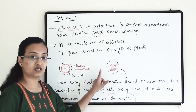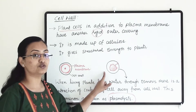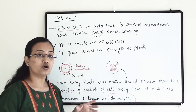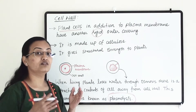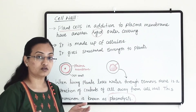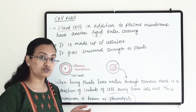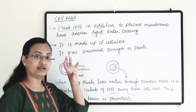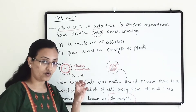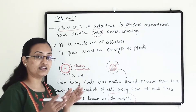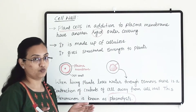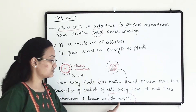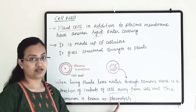Plasmolysis happens because of osmosis. When a lot of water is lost from the cell through osmosis, the inside content contracts and gets separated from the cell wall. That process is known as plasmolysis.